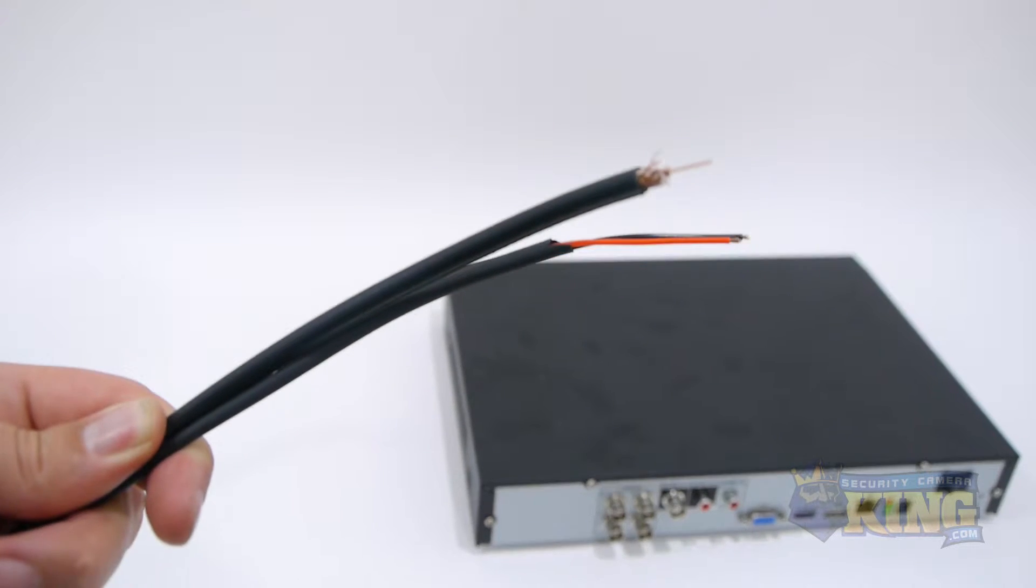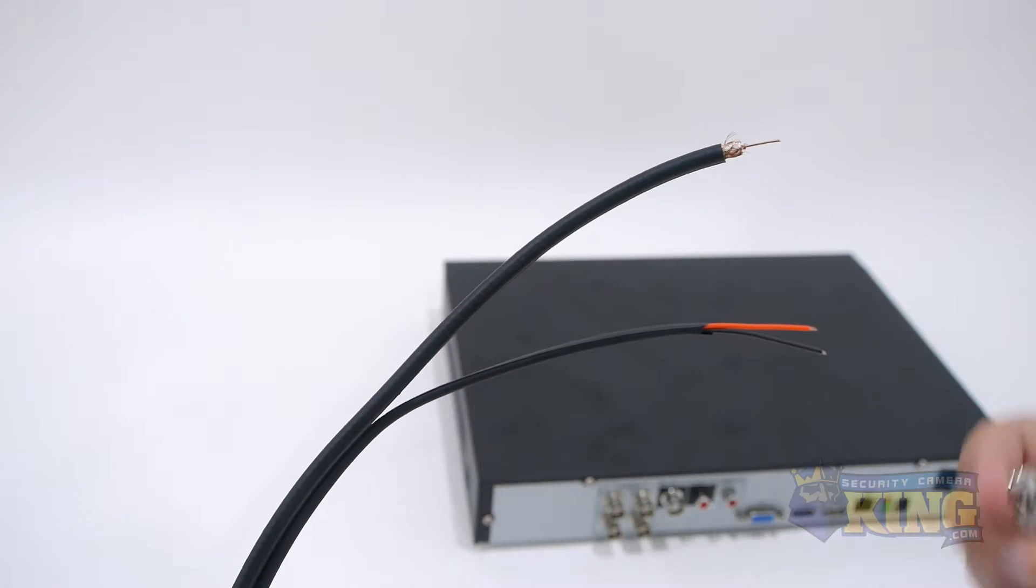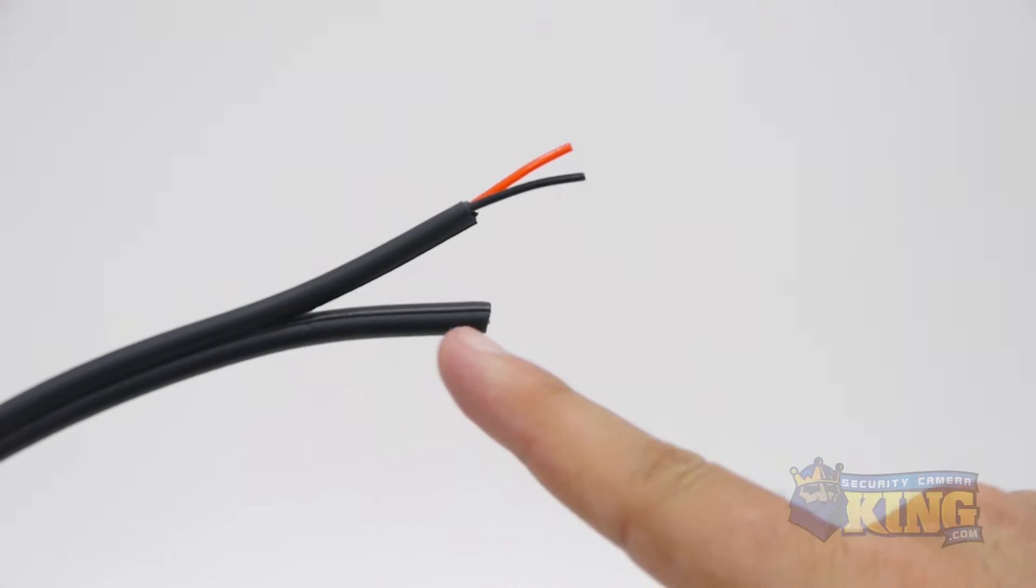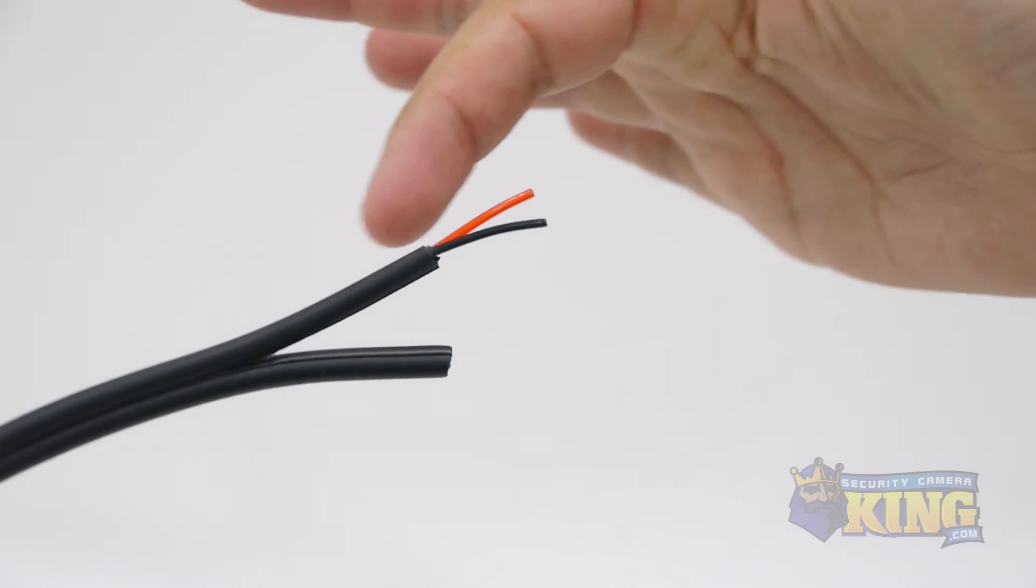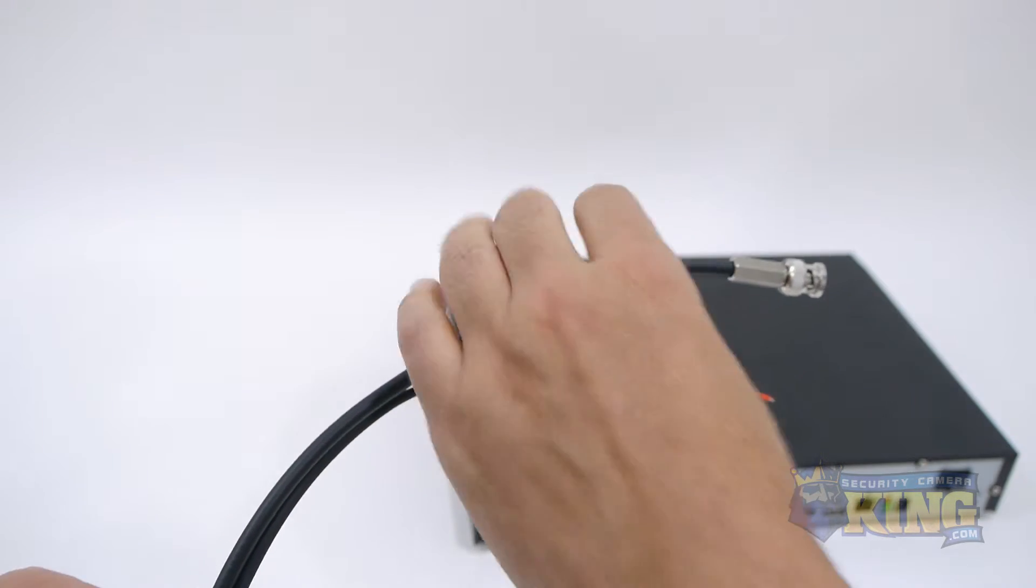Next, we're going to show you how to make your own cables using Siamese cable cut to length, power leads, and twist-on BNC connectors. Siamese cable is coax video cable along with a set of power wires. First, you'll need to twist on the BNC connectors to both ends of the cable.